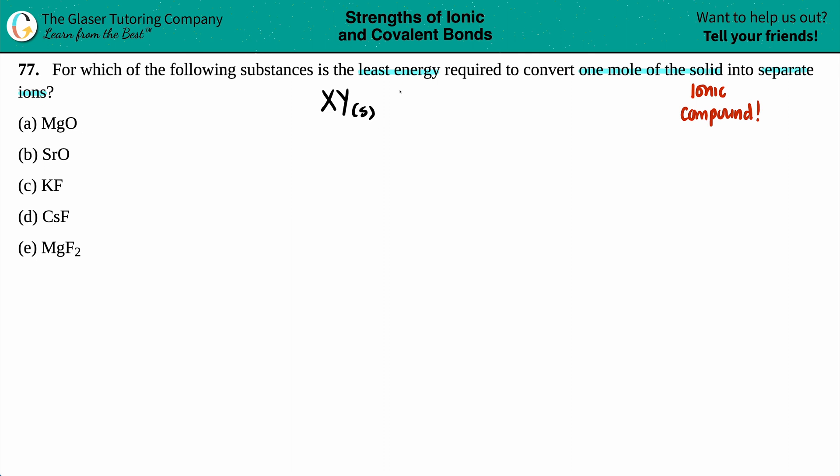You break the attraction and now you just have your X and your Y - these will be your charges. Those are the ions, the charged particles in their gas state. Right off the bat we're dealing with lattice energies, so we're trying to find the least amount of energy, specifically the least lattice energy.